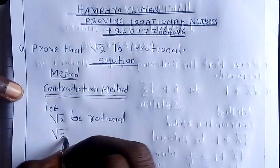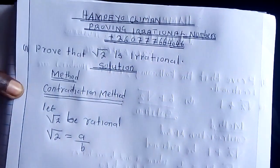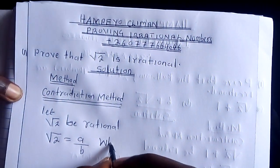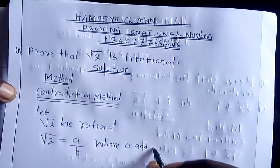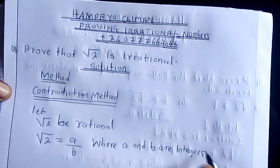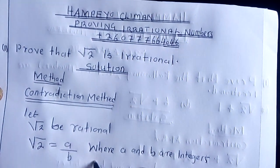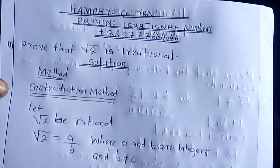Then the square root of 2 is going to be equal to A over B, where A and B are integers, and B must not equal 0.